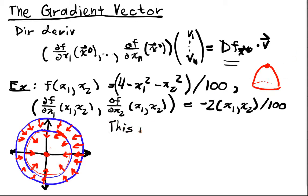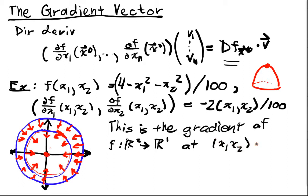So this is the gradient of f from R2 into R1 at x1, x2. And we can only compute a gradient. We can only compute a gradient vector if we have a scalar output for this function. So it's a one-dimensional output.